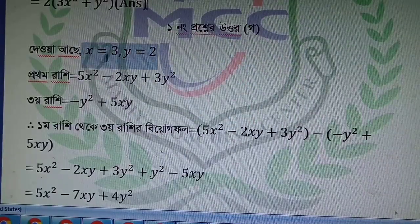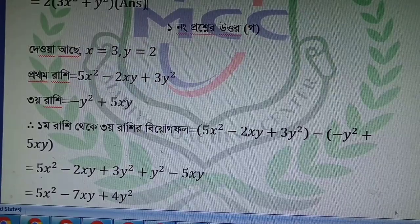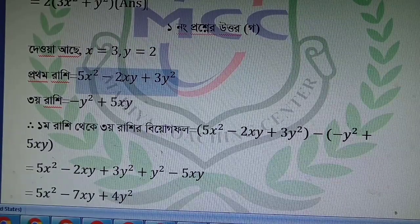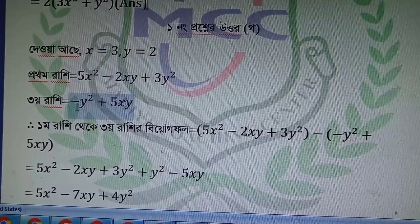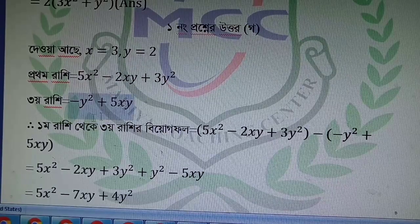The following question: x equals 3, y equals — evaluate 5x² minus 2xy plus 3y², then 3y² minus y² plus 5xy.